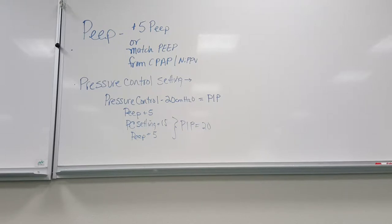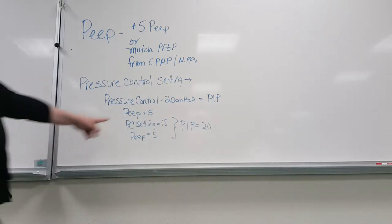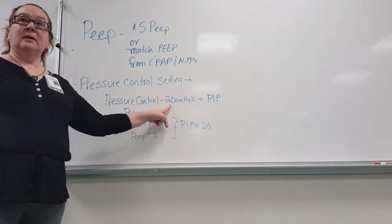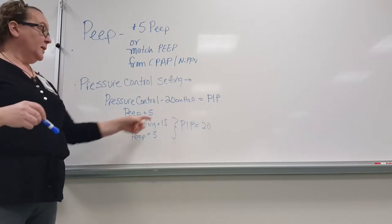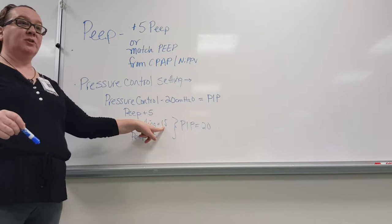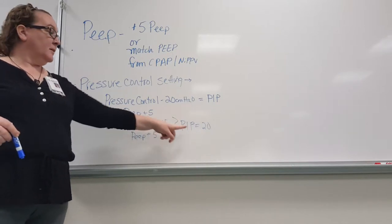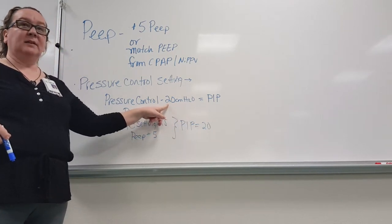Now if you're on the Draeger, you just put in 20 because it accounts for it differently. So whatever your pressure control number is — if you're on the PB, the Servo, or the Galileo — take that number, subtract your PEEP, and that will be the number you put into the pressure control settings. Then your PIP will equal 20, and that's what you'll see.